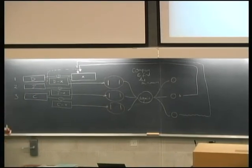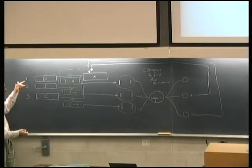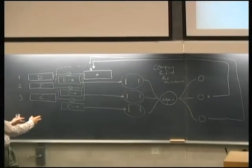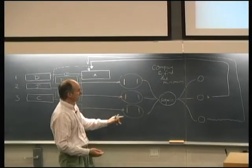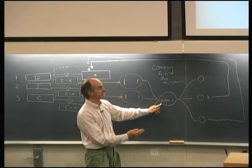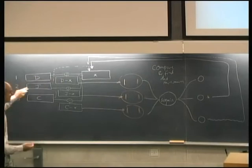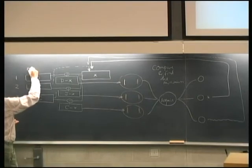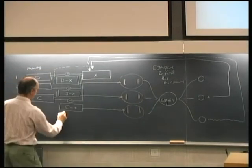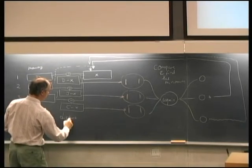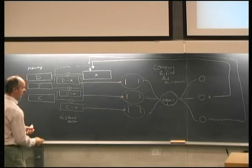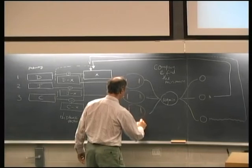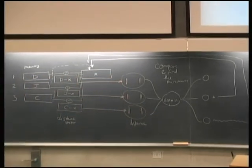You could write a computer program that does this: loop over memories one to m, do a comparison, keep a list of distances, find the closest one, then look up that memory and overwrite x with it. So you'd have a memory area, a distance vector computation area, these distances, and an argmin component.